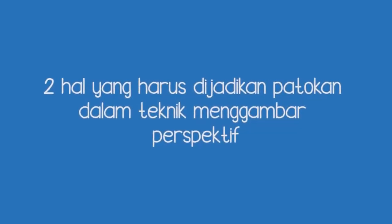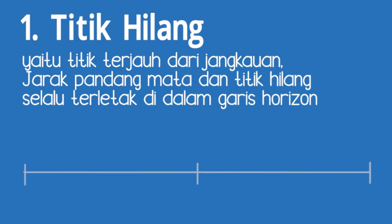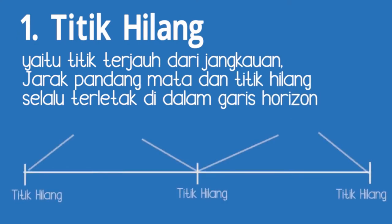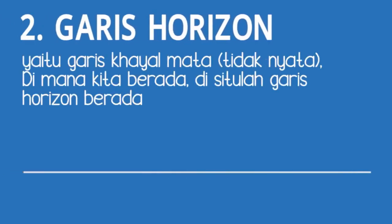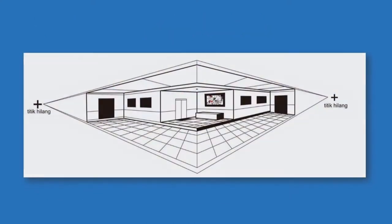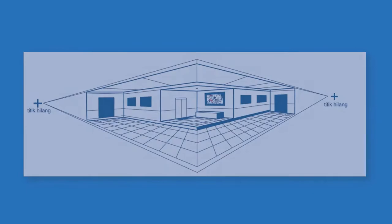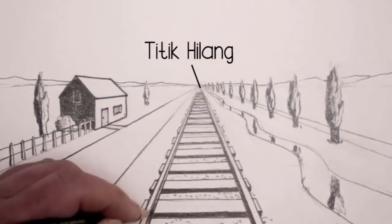Dua hal yang harus dijadikan patokan dalam teknik menggambar perspektif. Pertama, titik hilang, yaitu titik terjauh dari jangkauan jarak pandangan mata, dan titik hilang selalu terletak di dalam garis horizon. Kedua, garis horizon, yaitu garis hayal mata atau tidak nyata. Di mana kita berada, di situlah garis horizon berada.